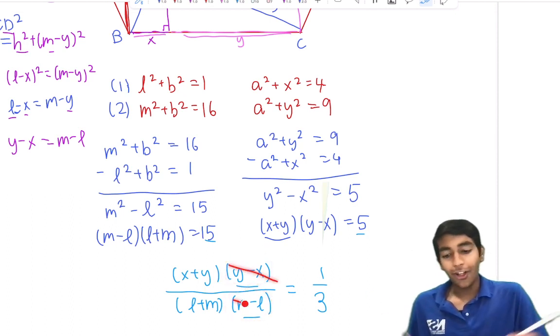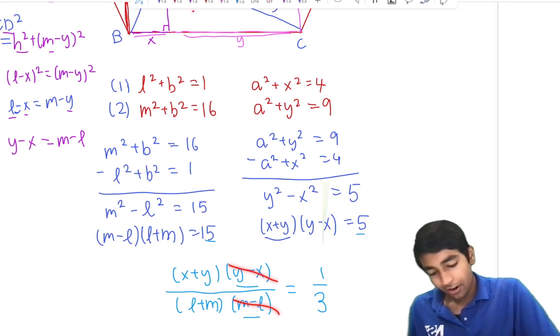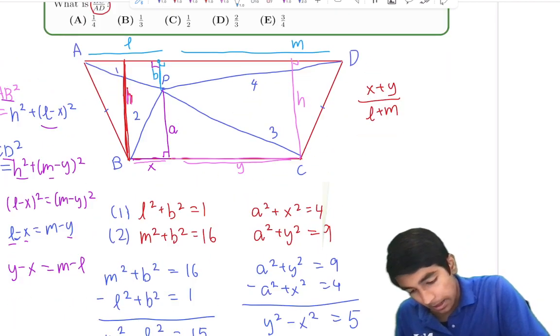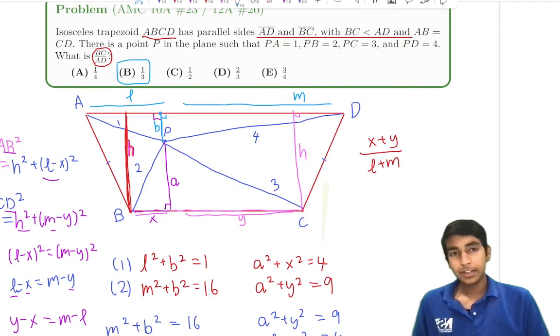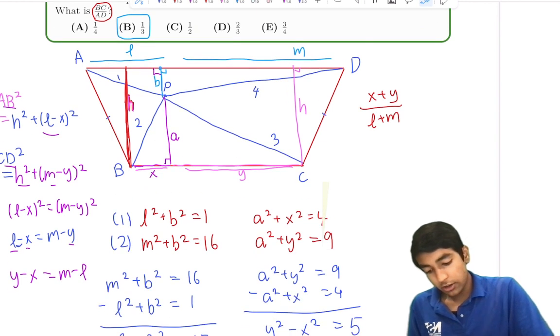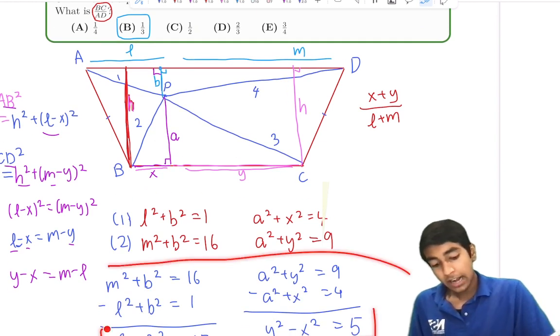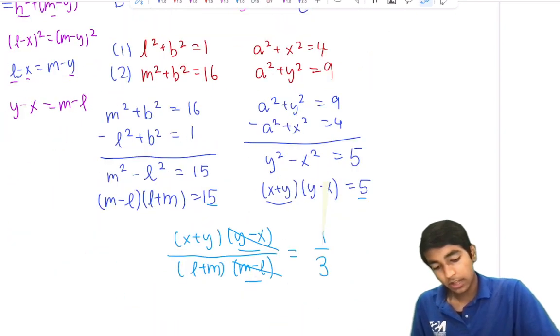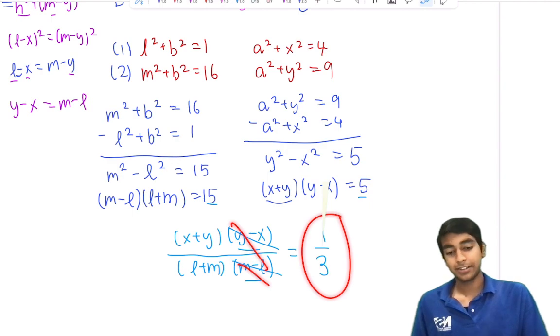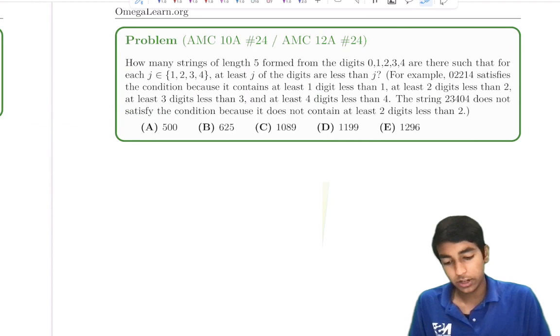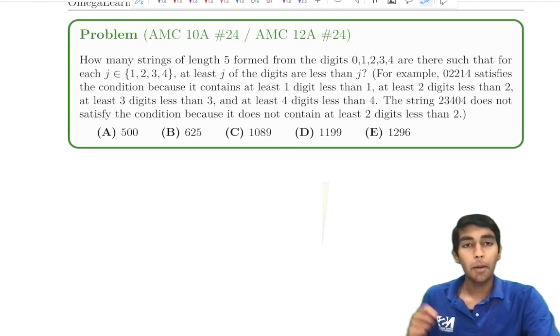Therefore, these terms are equal. So cancel, cancel. Our answer is just X plus Y over L plus M, a third, which is B. A great problem. Let's summarize. We drop the altitude, use Pythagorean theorem four times, then subtract the equations to get these quantities. Factor with difference of squares, then use the isosceles trapezoid trick. And then you cancel. A third is left. Cool problem. Now we're going to move on to another problem from number 24.